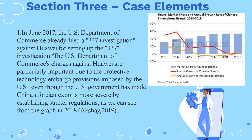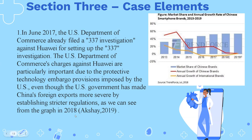In week three we explained that Huawei faces three major problems in exporting cell phones, with three main alternatives. Point one: as indicated in the figure, in June 2017 the U.S. Department of Commerce filed a Section 337 investigation against Huawei. Even though the U.S. government has made China's foreign exports more severe by establishing stricter regulations, Chinese smartphones still delivered an impressive performance in 2018, breaking the dominance of Korean and American brands in the global smartphone market with a market share of 54%.